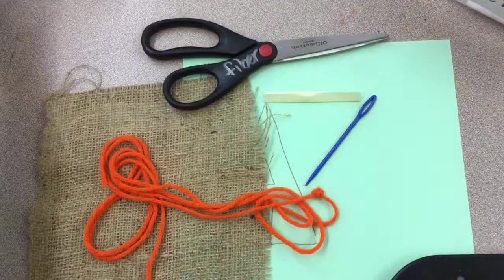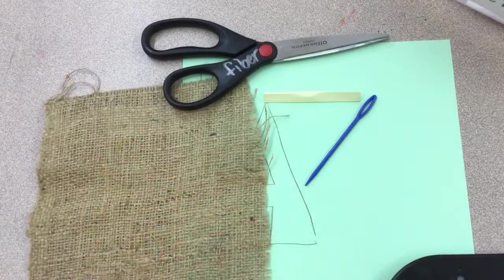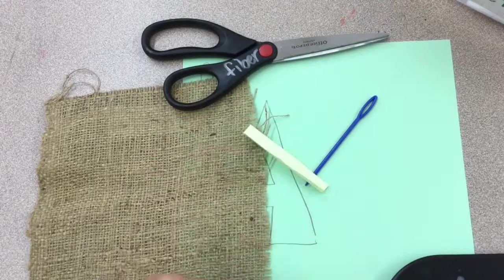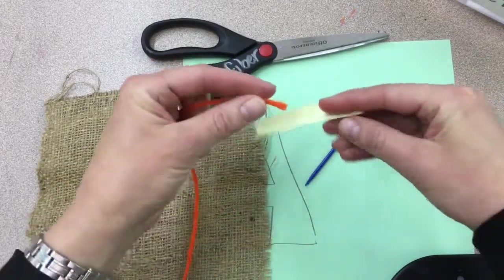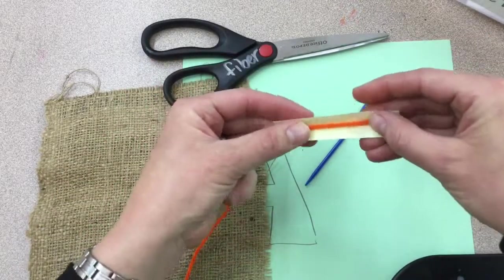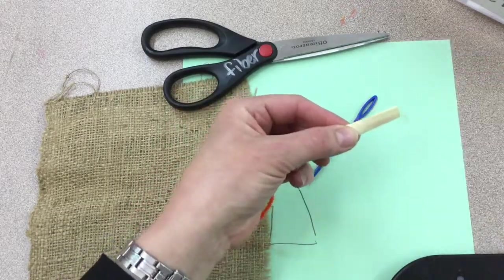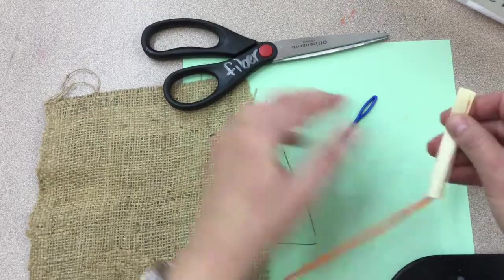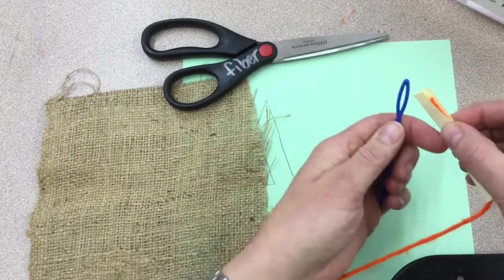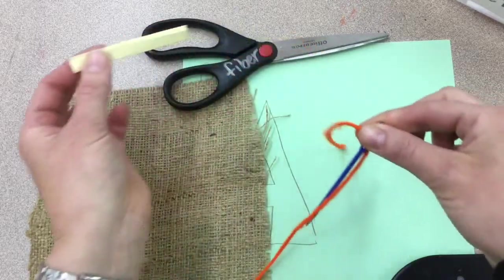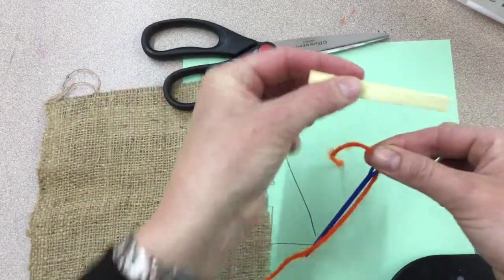So to thread your needle, you're going to take your needle threader, which is a folded piece of paper, and you're going to put your piece of yarn inside that piece of paper and close it so that the yarn is not sticking out one end. Then you take your needle threader with the yarn in it and you push it through the eye of the needle. Hold that, and then your needle threader goes back in the needle threader kit.